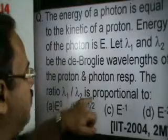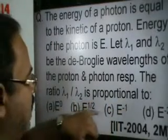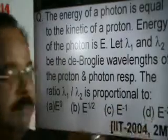The ratio lambda 1 by lambda 2 is proportional to E power 0, E power half, E power minus 1 and E power minus 2. So let us solve this problem.